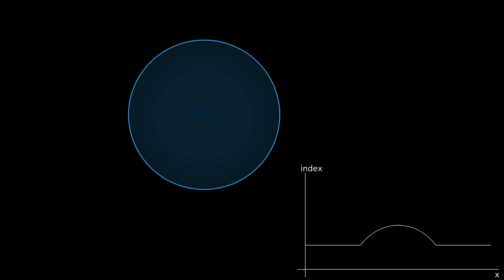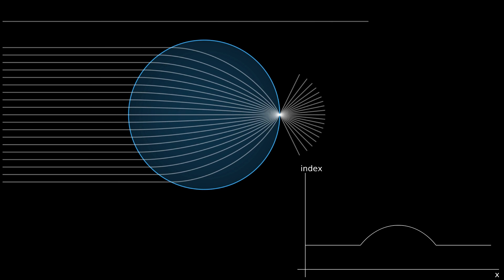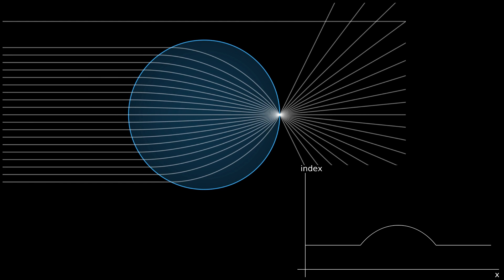For example, the Lundberg lens. Here, the index of refraction at any given point within the lens is equal to the square root of 2 minus the point's position over the lens's total radius, squared. No matter where the light enters, it will bend and focus on the optical axis on the other side of the lens.